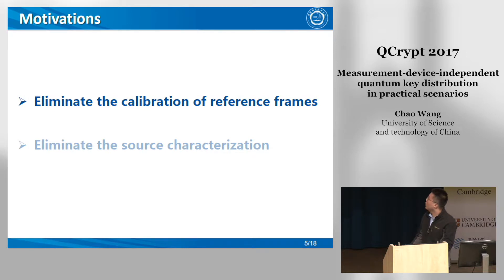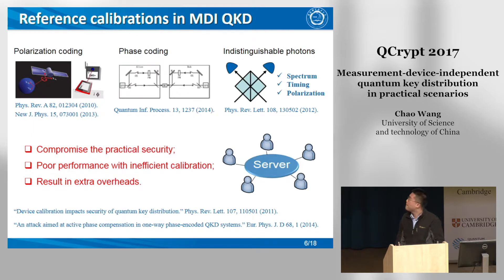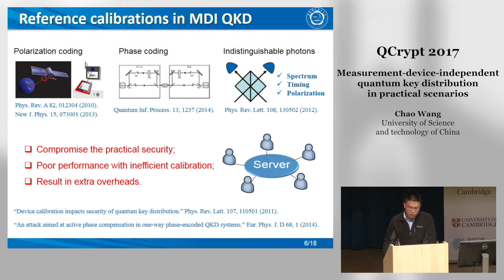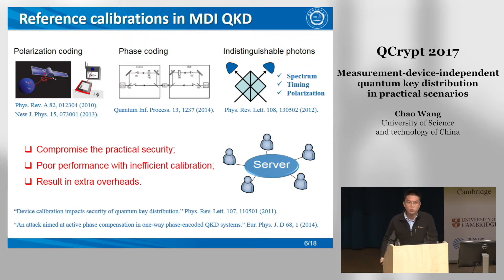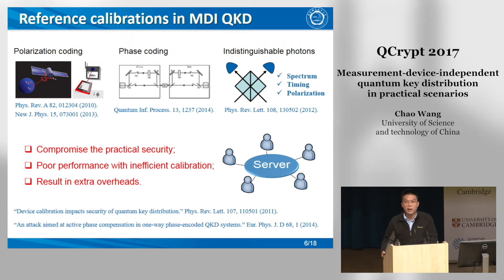So we have two goals. One goal is to eliminate the calibration of reference frames, and the second is to eliminate the source characterization of the imperfect quantum source. In MDI-QKD, all the reference frames should be strictly aligned, including the coding reference frame as well as other physical dimensions. In a polarization coding system, the coding reference frame means the polarization basis of different users, and it may differ from user to user. In a phase coding system, the coding reference frame means the phase difference between the state preparation in the interferometers, and it may be influenced by the environment.